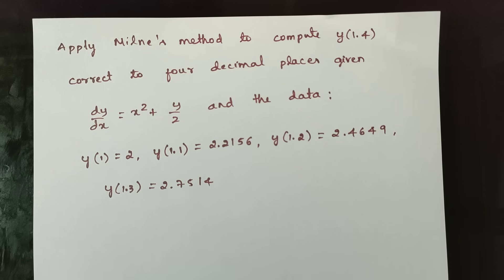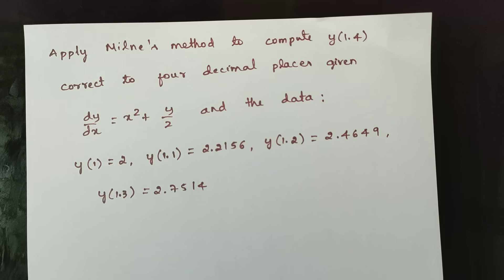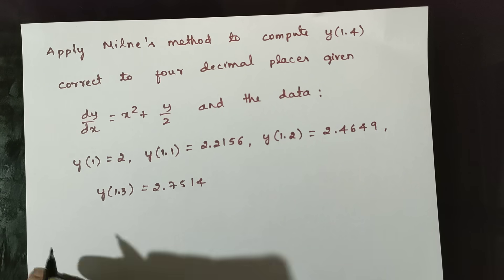Next question: Apply Milne's method to compute y of 1.4, correct to 4 decimal places, given dy/dx is equal to x² + y/2, and the data: y(1) = 2, y(1.1) = 2.2156, y(1.2) = 2.4649, y(1.3) = 2.7514.